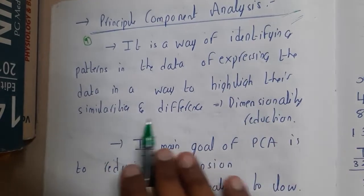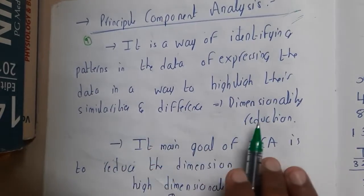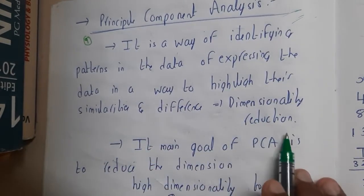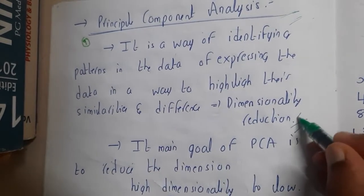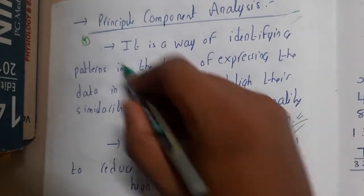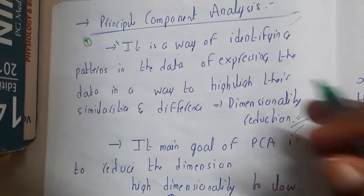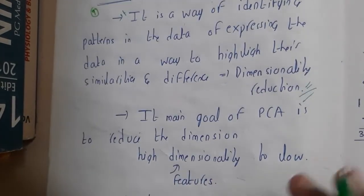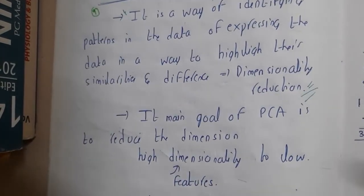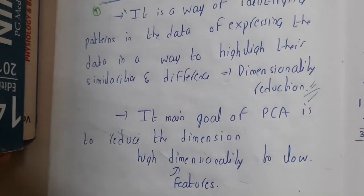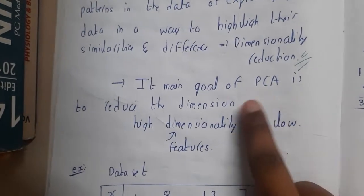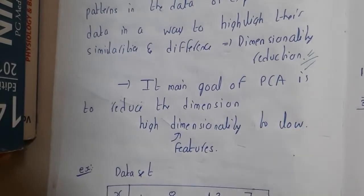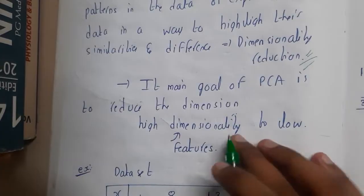That is nothing but dimension reduction. So the main goal of PCA is to reduce the dimension — from higher dimension to lower dimension. Dimension is nothing but the features.